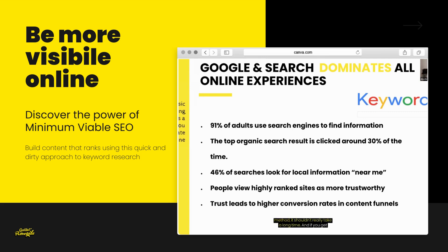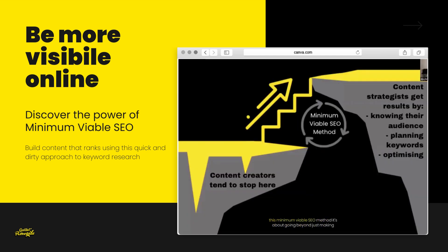It shouldn't really take a long time, and if you get in the practice of doing it just before you start creating the content, you have the most chance of maximizing your success. We know that SEO is really, really important if you want to create content online that lives in an evergreen way. This Minimum Viable SEO method is about going beyond just making content and hitting publish. It's about leveling up your skills to make sure you can know your audience, plan your keywords, and then optimize the success of your content. The problem with SEO is that most people don't give it a moment's thought because it's all too hard, all too complicated. But if you spend 10-15 minutes on Minimum Viable SEO before you create your content — just after you've had the idea for what you want to create — you can really maximize your success online.